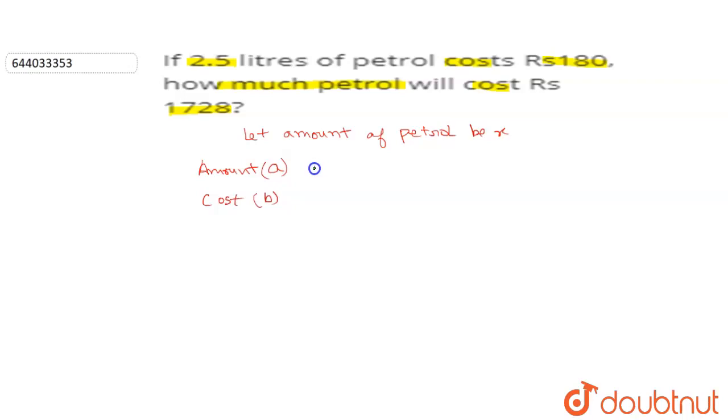So let us see the parameters which are given in this question: 2.5 liter petrol costs 180 rupees and x liter of petrol costs 1728 rupees.